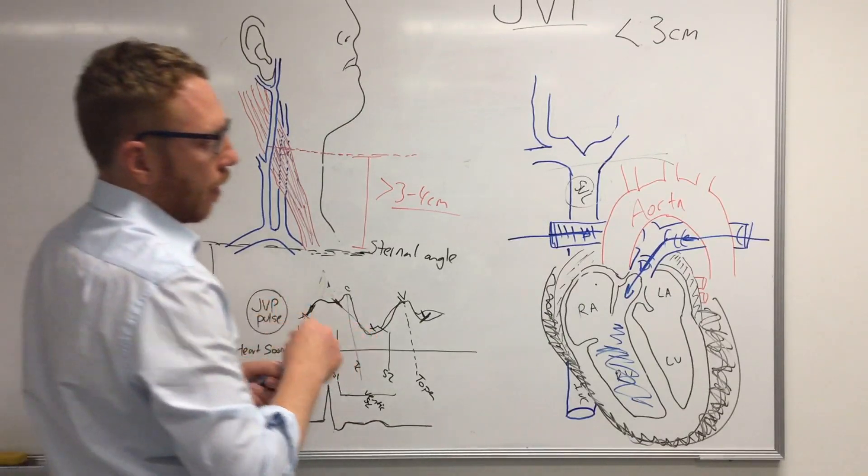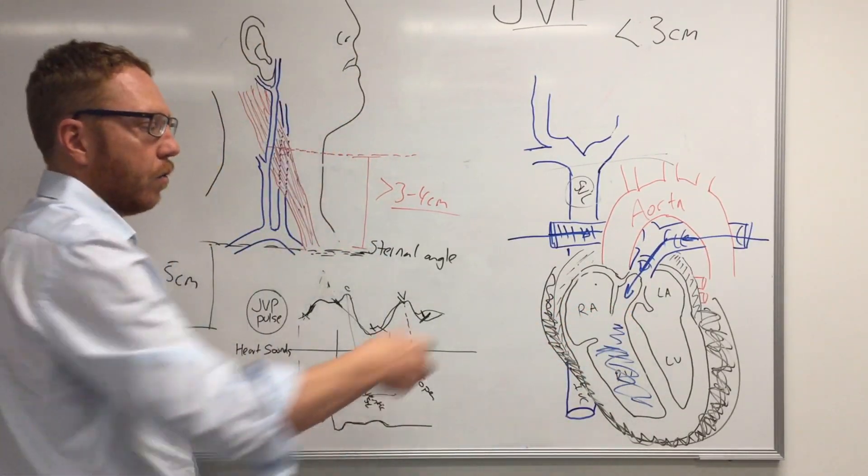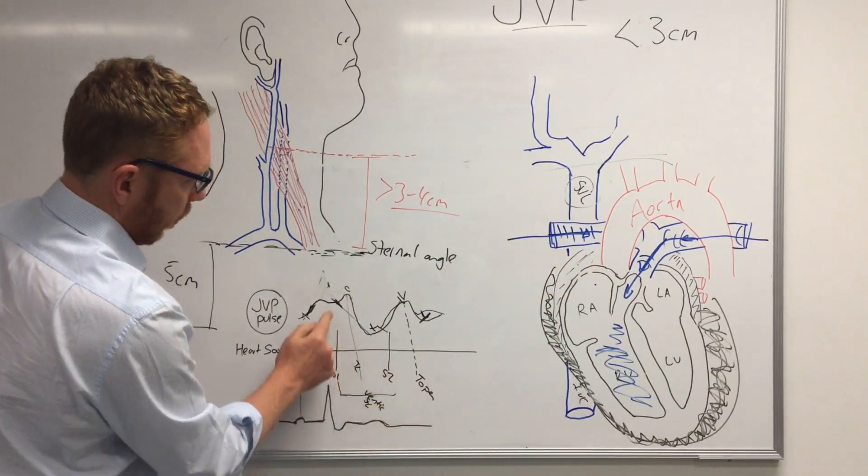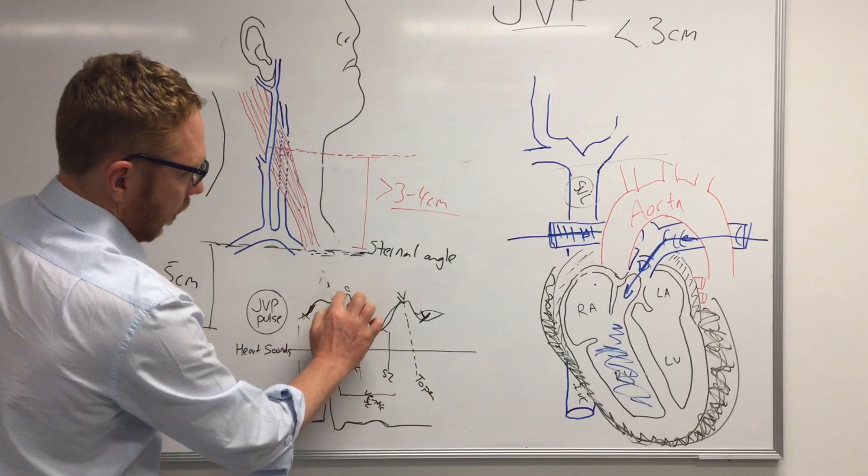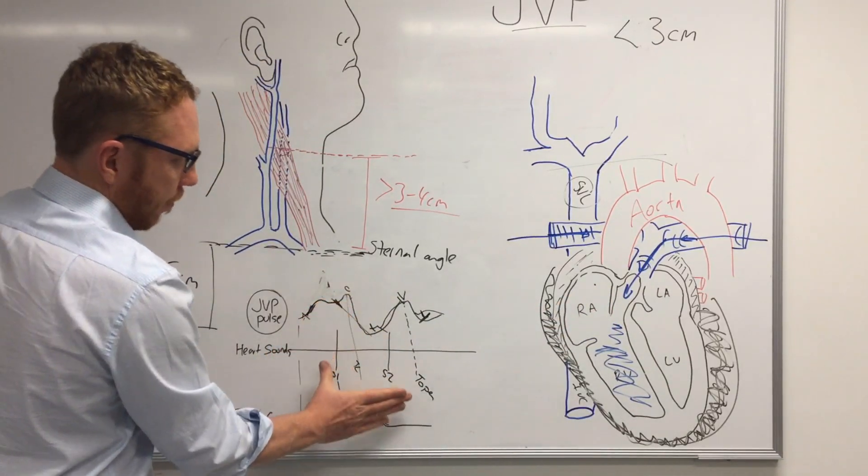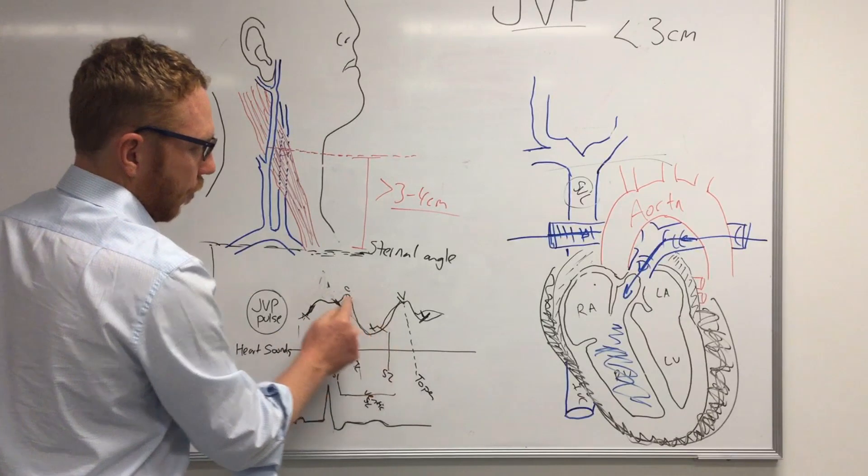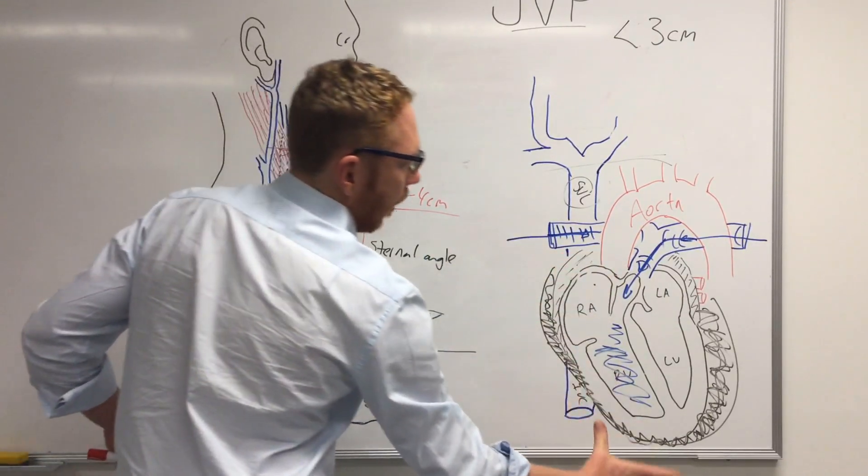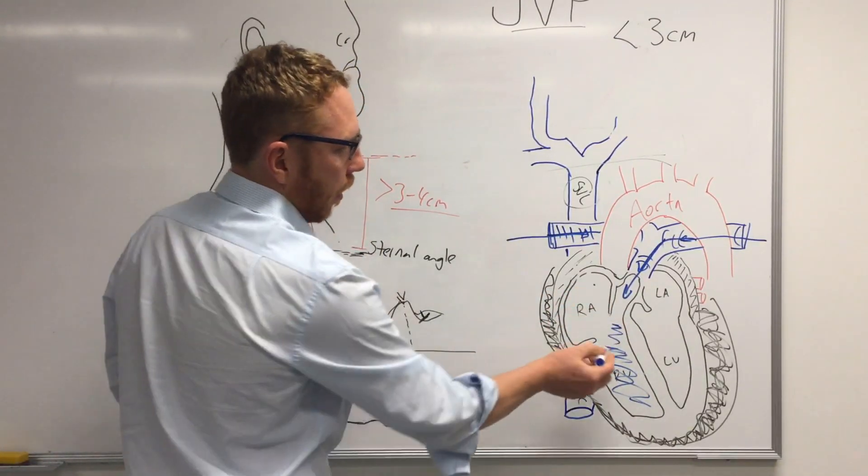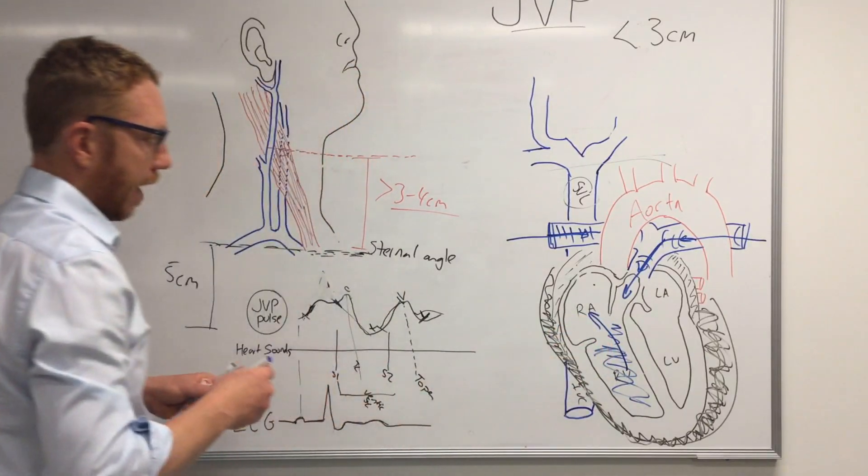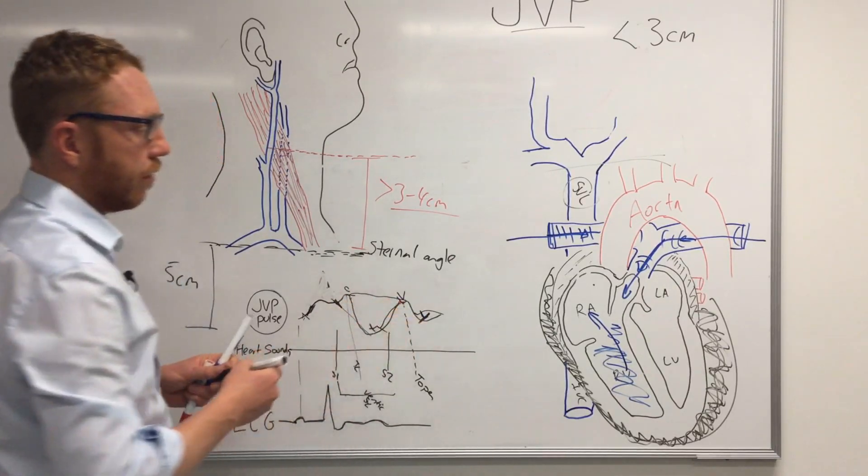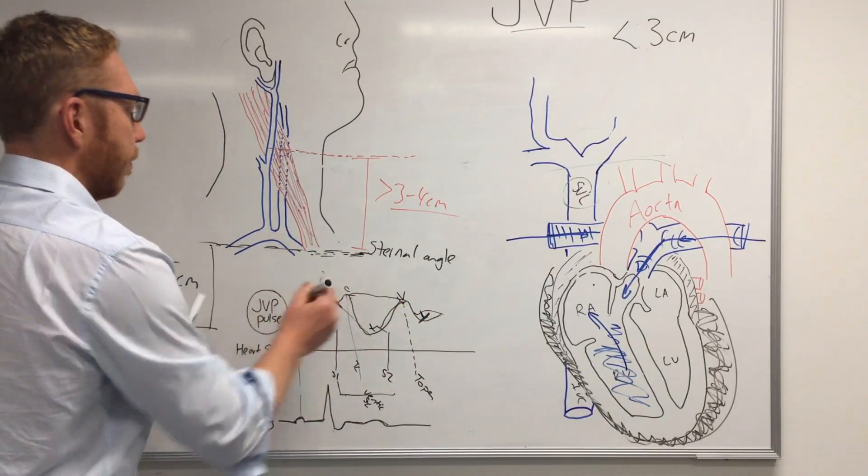Another example would be a valve that is regurgitating, or this tricuspid valve is incontinent. So that means when you go into systole, so as this is going, so you've got your closure of this, which gives you the C wave, and the ventricles are contracting, as your atria, going down to the X wave, is relaxing. So as this is contracting, what would happen if this is regurgitating, or incontinent, the fluid will go back into it. And as a result, you might see a no X wave, and it kind of goes straight across to the V wave, or a CV wave, maybe even a higher one.